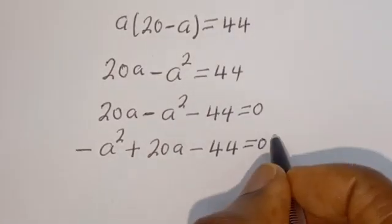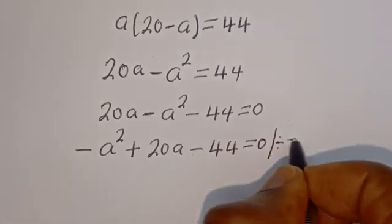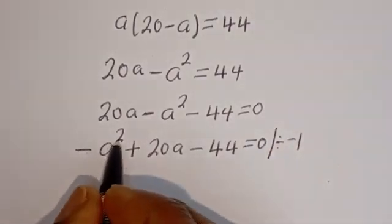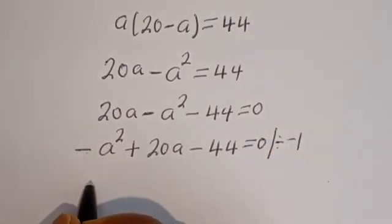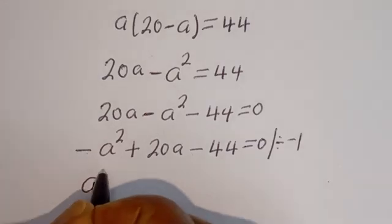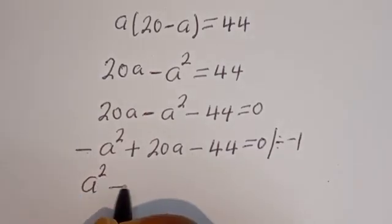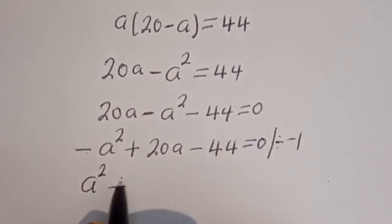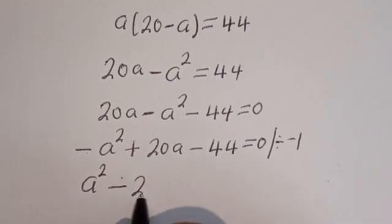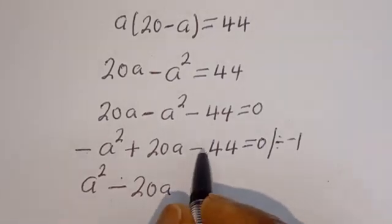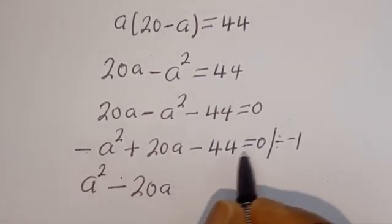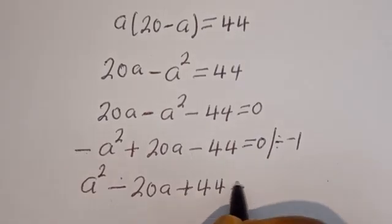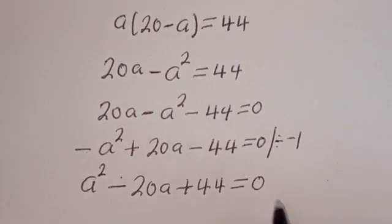In standard form we have minus A squared plus 20A minus 44 is equal to 0. Now let's divide all terms by minus 1: A squared minus 20A plus 44 is equal to 0.